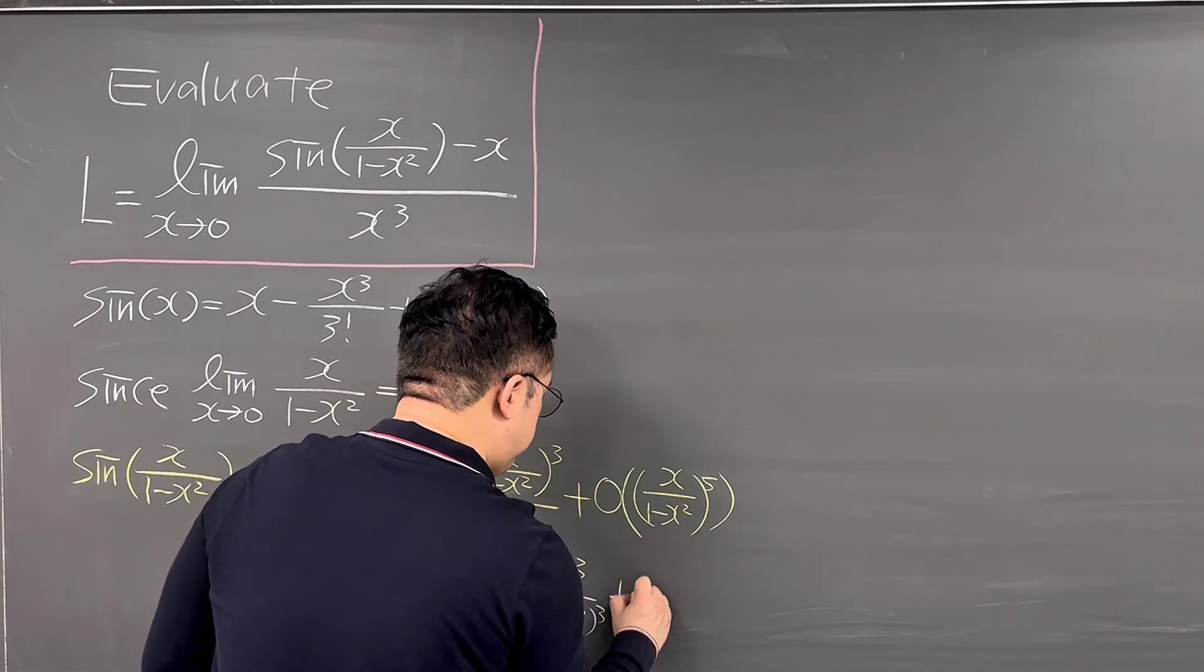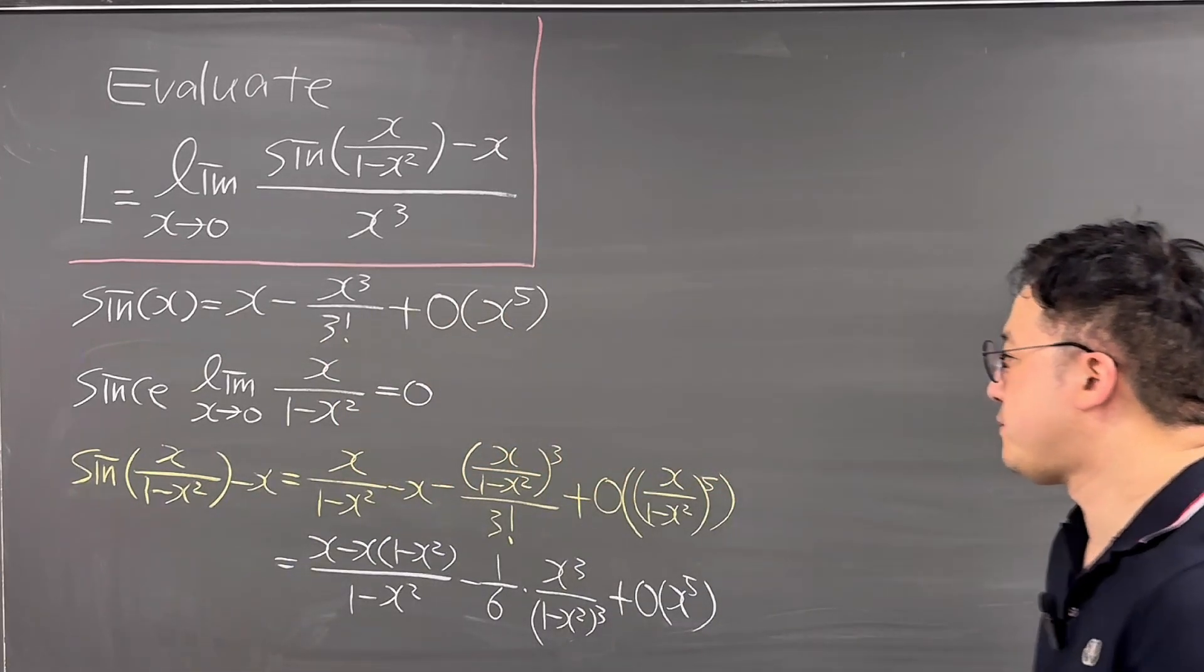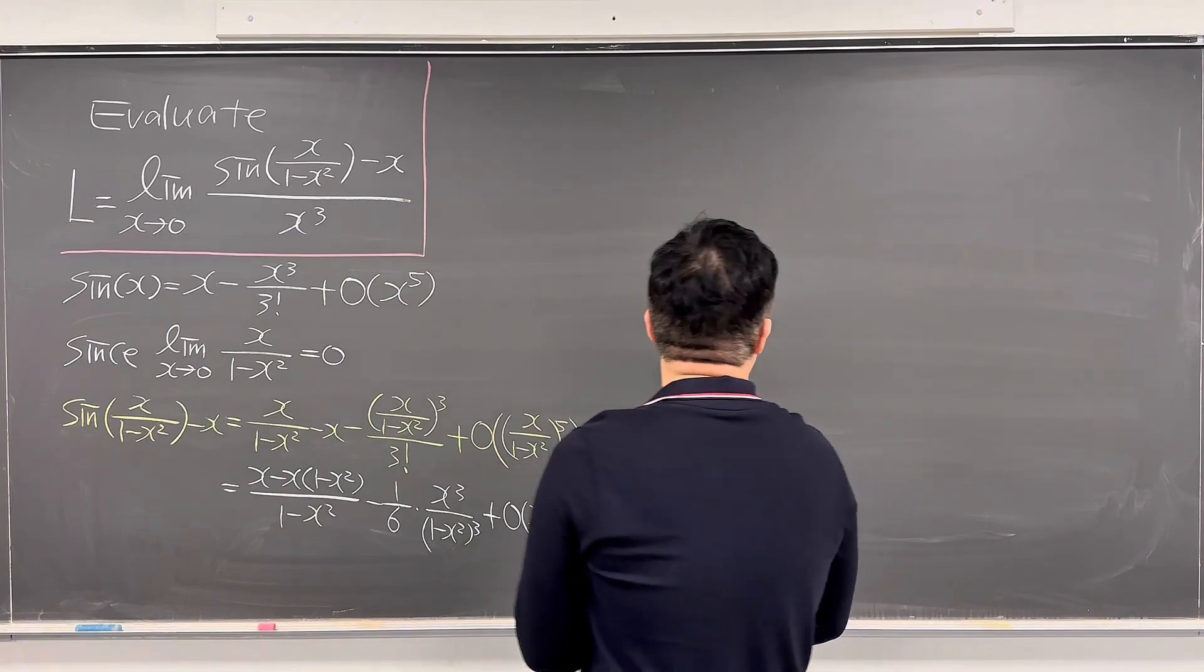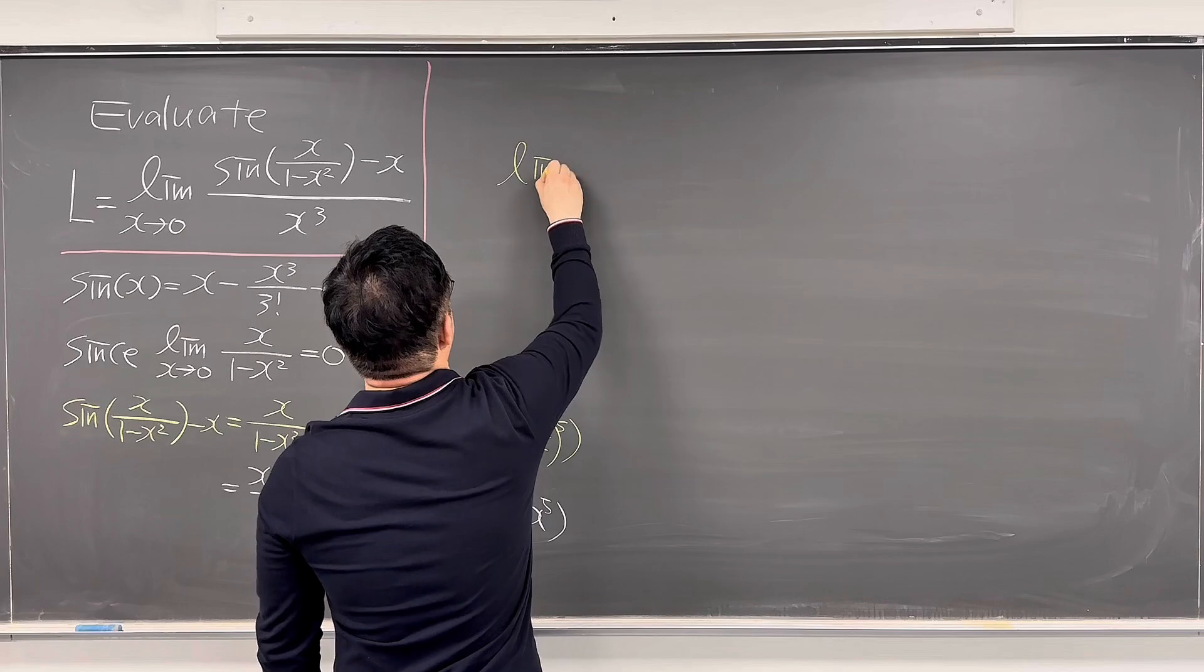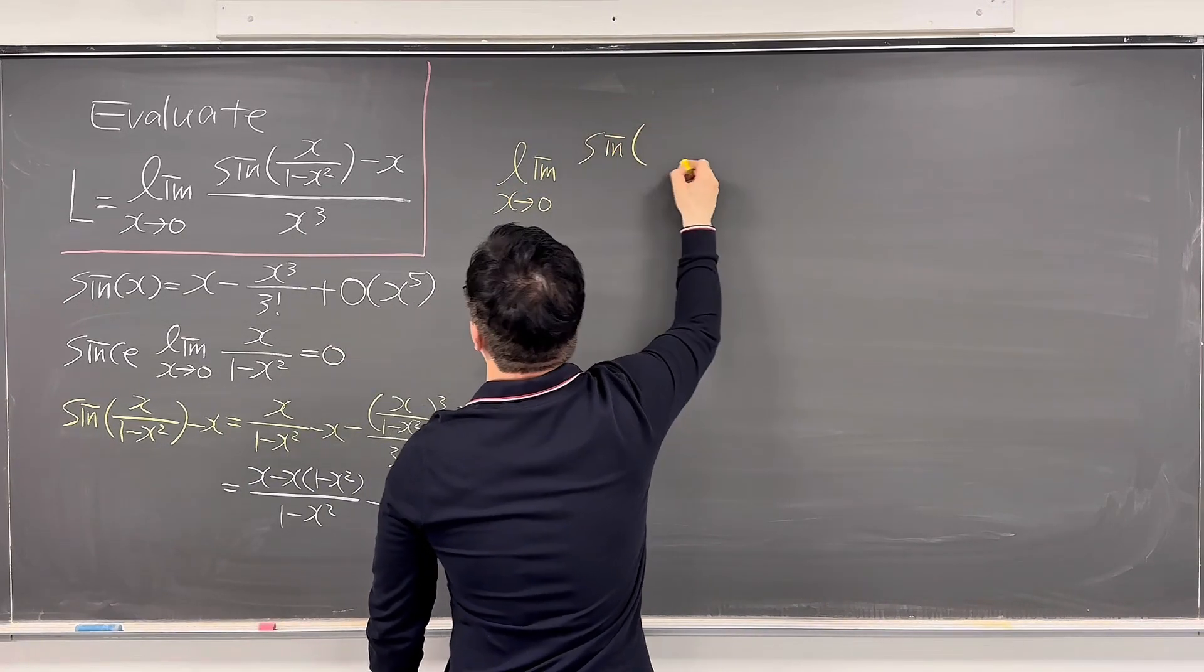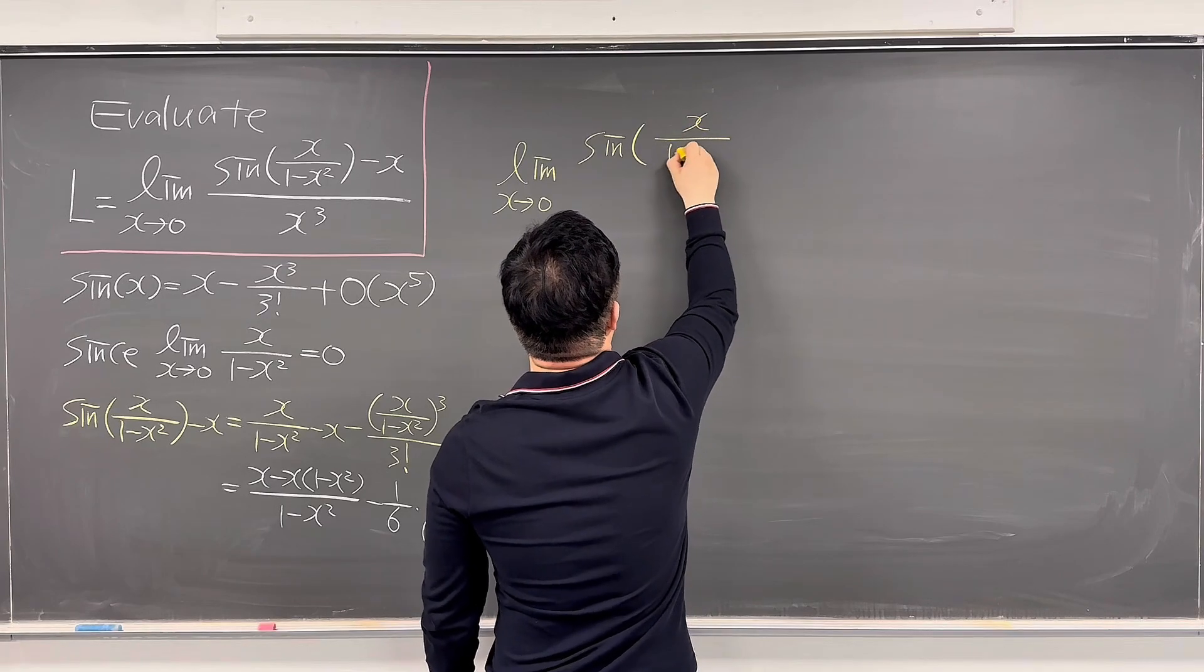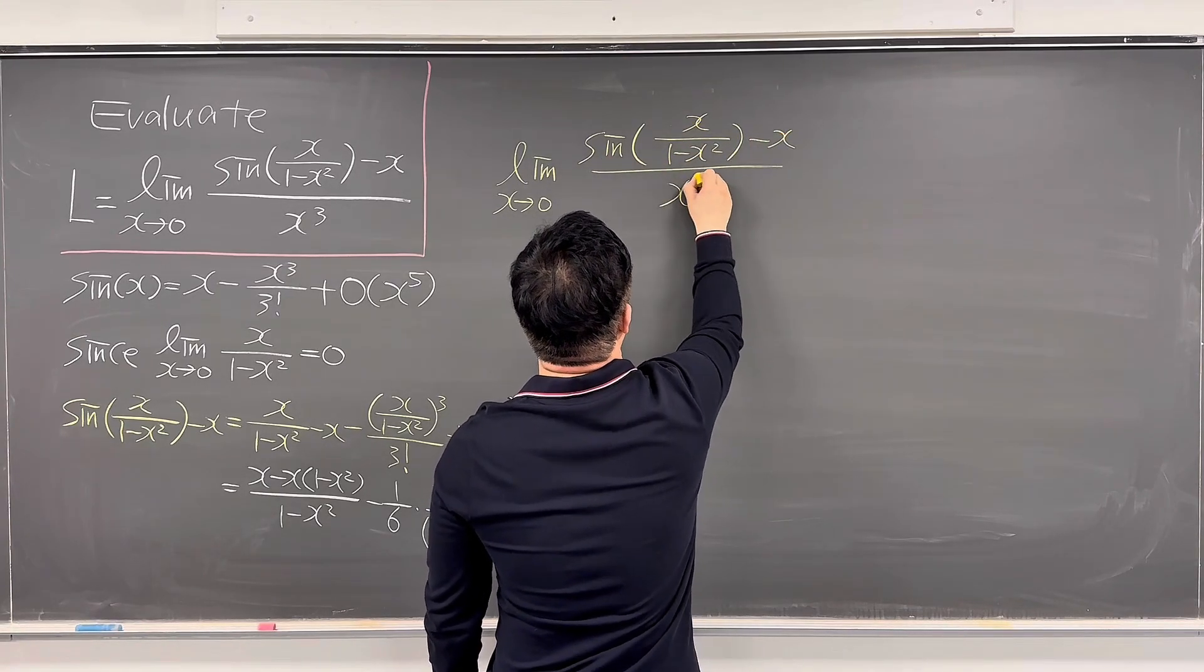And this term is just the same as plus big O of X to the power of 5. Okay, so then based on this, we can just talk about this limit. So let me just write this down again. Limit X is going to 0, sine of X over 1 minus X squared minus X, over X cubed.